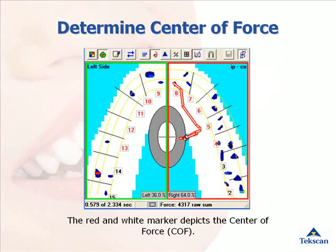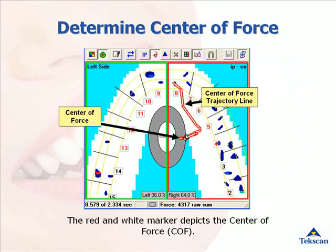Each T-Scan recording has a center of force trajectory line that displays the history of the patient's bite. The center of force is a timeline of what happens throughout the path of closure. Each segment of the center of force trajectory line represents one click of the mouse, or one hundredth of a second in time. For this patient, most of the force begins mid-arch left side. As the occlusion comes together, the posterior right side occludes, bringing the center of force to the center. However, as they continue to close, the left side picks up more contact, pulling the center of force posterior left. This is an obvious case of occlusal timing issues and lack of balance.